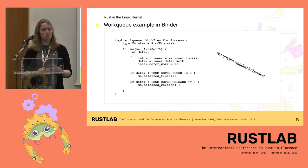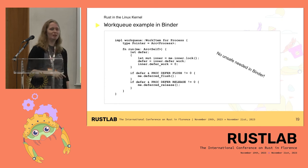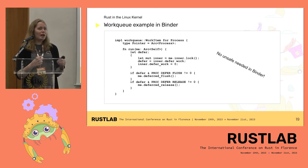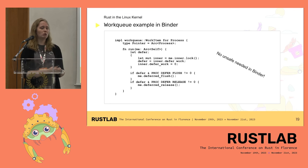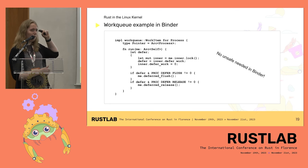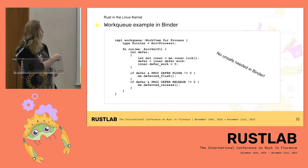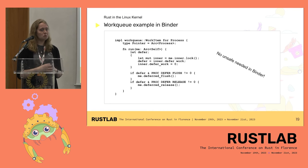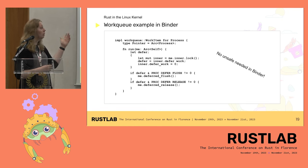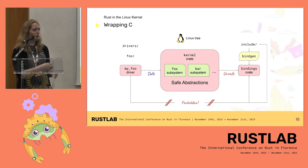One example is the work queue — a tool in the kernel that you can use to take some function and say 'run this soon,' and the kernel will do that. I had to write a wrapper around the C work queue API to make sure we could use it from Rust, preferably idiomatic Rust. In binder, we just implement the work queue work item trait, implement our run function with the code that should happen, and then you can just schedule the thing. The important thing is that in binder, we didn't need any unsafe to do this. Of course, the work queue wrapper itself is unsafe — but not in binder.